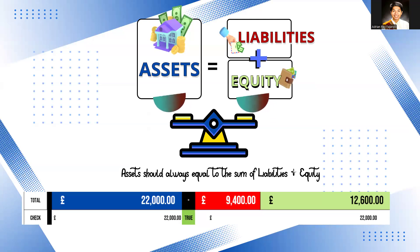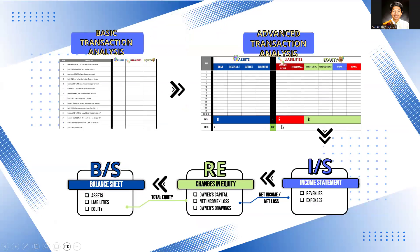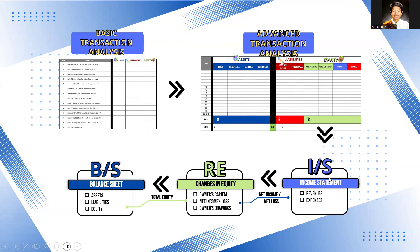This proves our core equation: everything that you own — your assets — is just the sum of what people lend to you through liabilities or what you've put up through your own equity. Now that we're done with advanced transaction analysis, there's a flow to the financial statements. After your transaction analysis or journal entries, the very first statement you make is your income statement so you can track revenues and expenses.